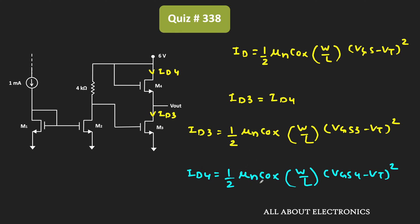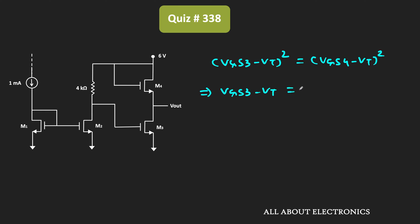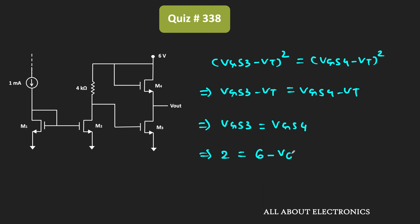Since the device parameters of all MOSFETs are equal, the device constant and threshold voltage are the same for all. Equating ID3 and ID4 gives (VGS3 − Vt)² = (VGS4 − Vt)², which simplifies to VGS3 − Vt = VGS4 − Vt, or VGS3 = VGS4. Since VGS3 = 2 V and VGS4 = 6 V − VOUT, we get VOUT = 4 V.